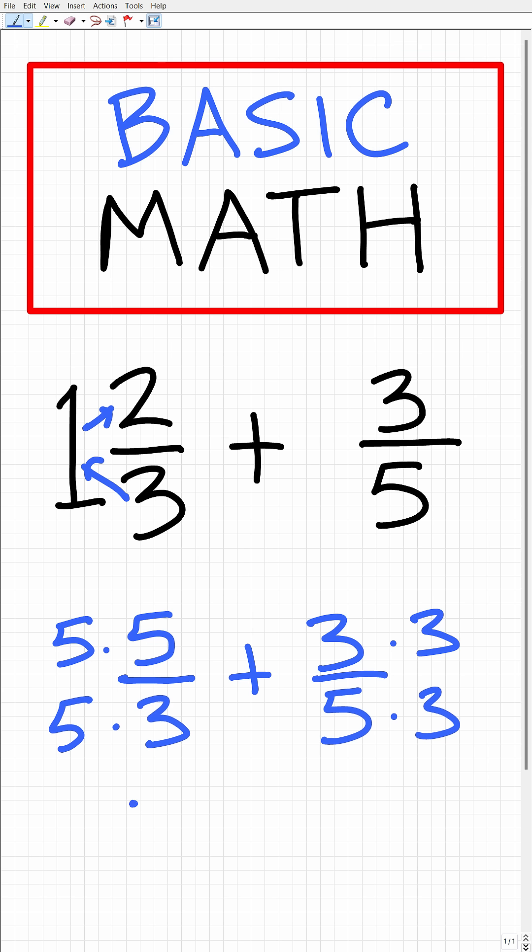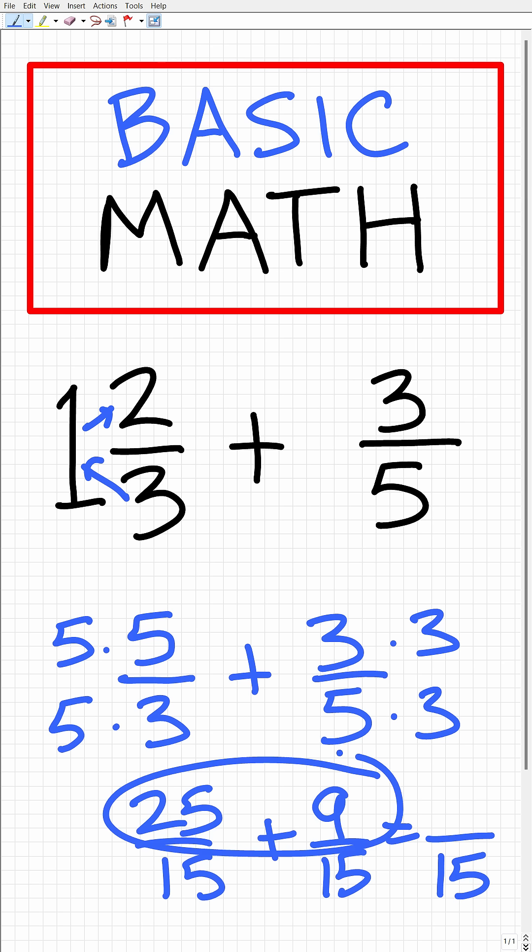Okay, so 5 times 5 is 25, so we have 25 over 15 plus 3 times 3 is 9, 9 over 15. So the correct answer here is going to be the sum of the numerator, so that's 25 plus 9, which of course is 34. So our final answer is 34 over 15.